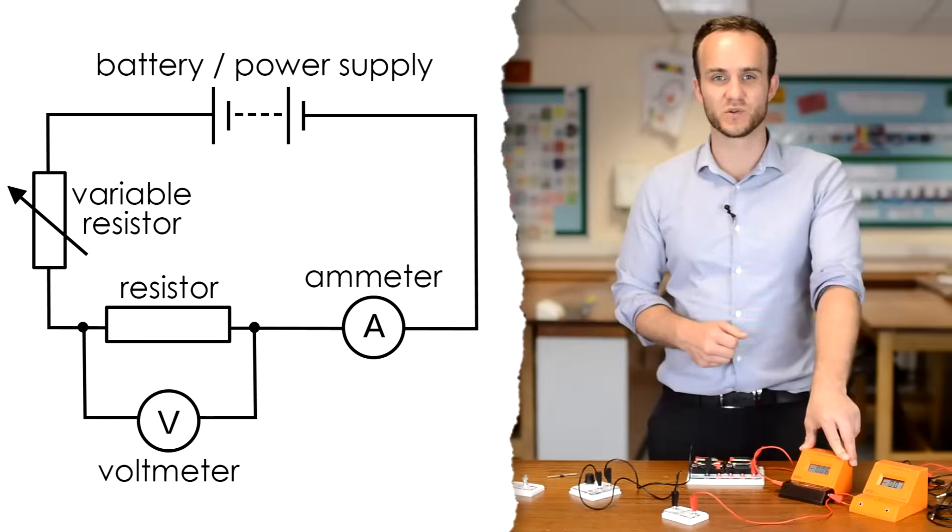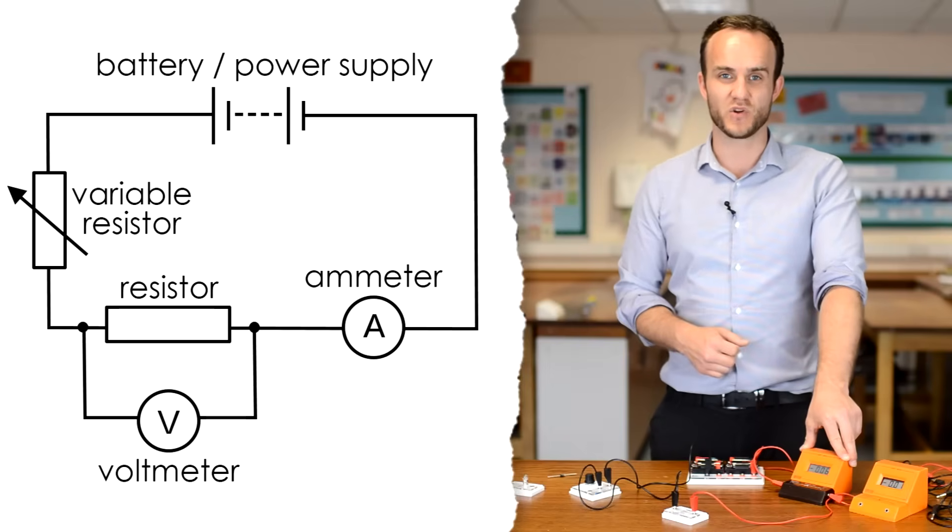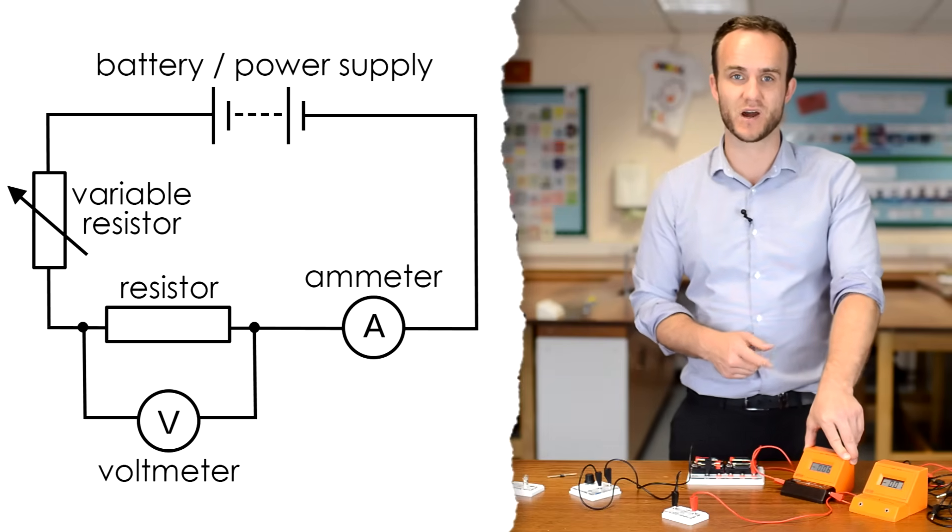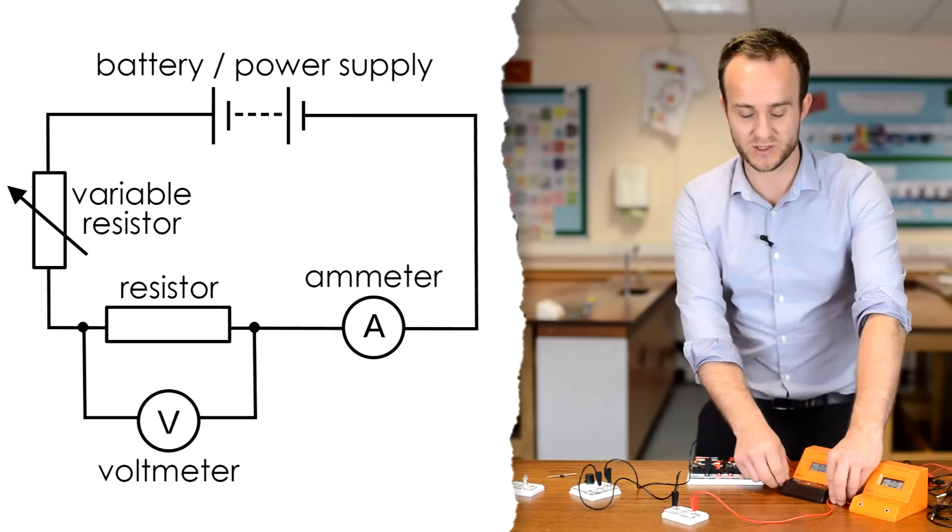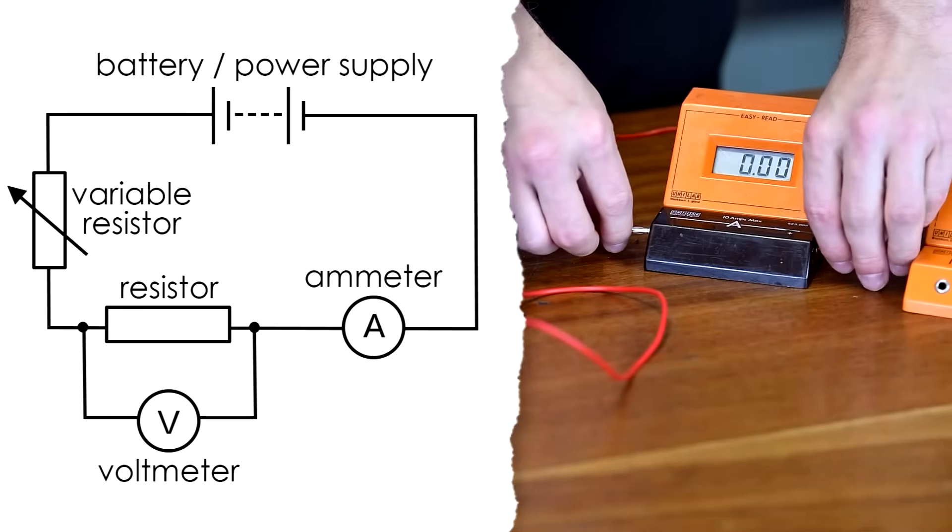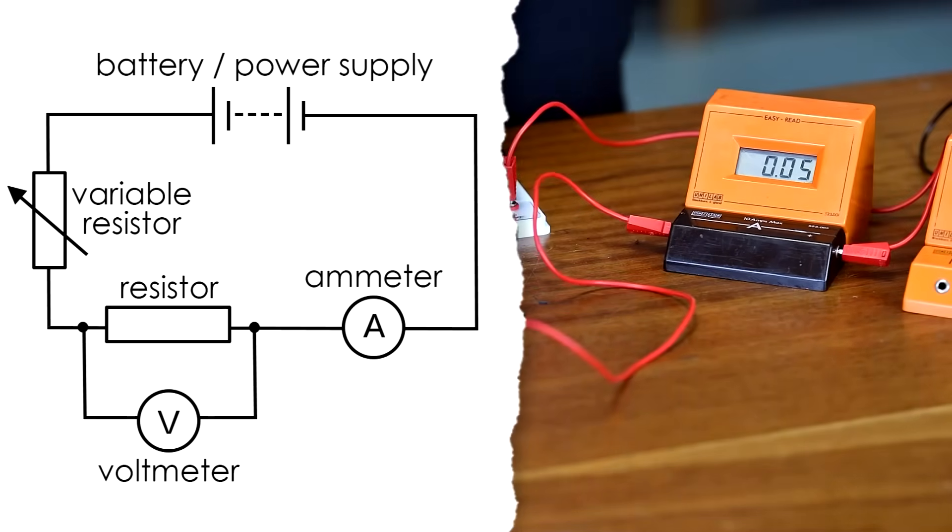Now I can see that my ammeter is giving a reading of minus 0.06 amps. Now, usually when we do practicals with circuits, we tell you not to worry if there's a minus. It's just the same number. It's just the leads are in the wrong way around. But this time, we do want to make sure that we have a positive current, at least a positive current, when we have a positive voltage. So I'm just going to swap my leads around in my ammeter to get a reading of plus 0.06 amps.